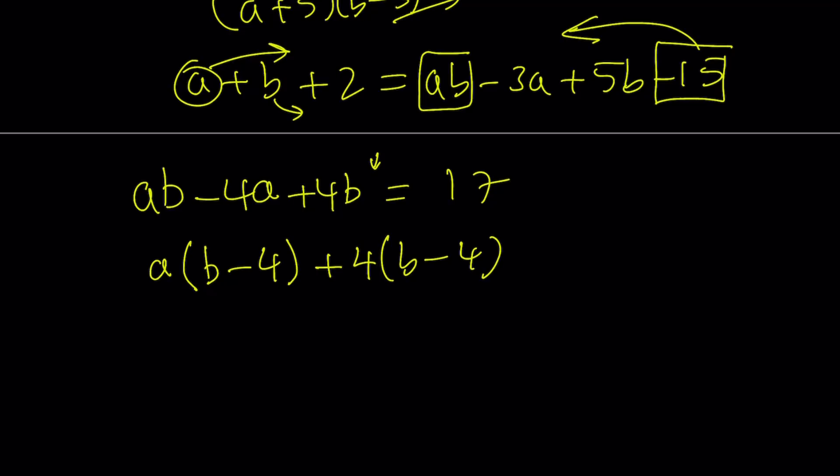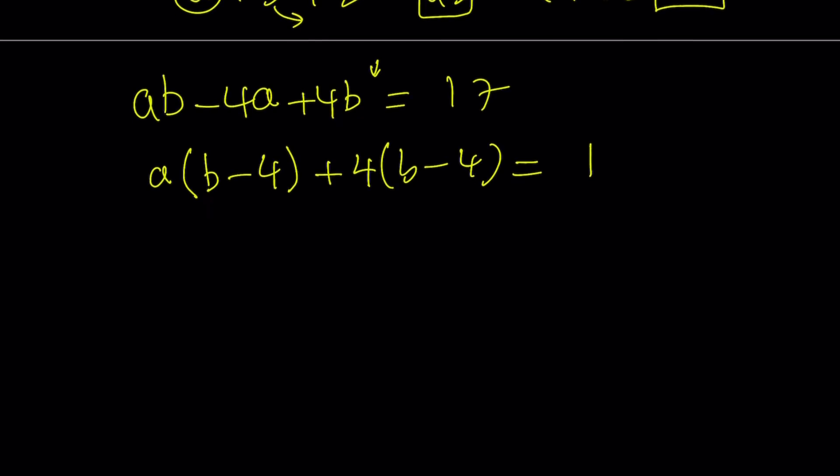That means I'm adding a negative 16 to both sides, or subtracting 16, which gives me a 1 on the right-hand side. Fairly easy, right? You're just subtracting 16 from both sides, and then this becomes factorable by grouping, and then you just factor it by grouping.